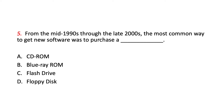5. From the mid-1990s through the late 2000s, the most common way to get new software was to purchase a blank. A. CD-ROM. B. Blu-ray ROM. C. Flash drive. D. Floppy disk.